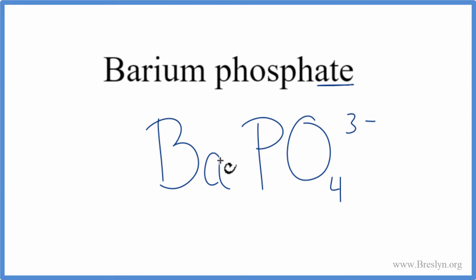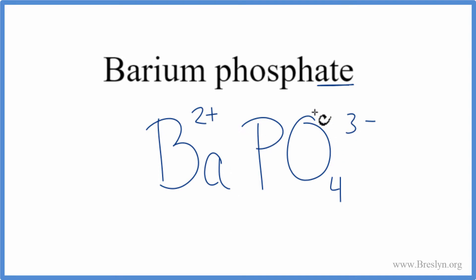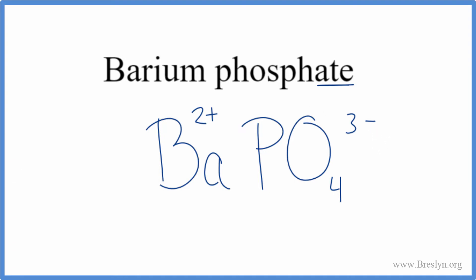Barium is in group 2 — we looked that up on the periodic table — so it has a 2+ ionic charge. We said the phosphate has a 3−. These charges need to add up to 0 to give us a net charge of 0, which they don't right now.